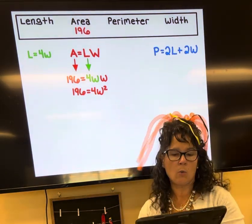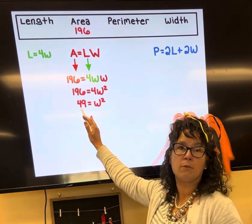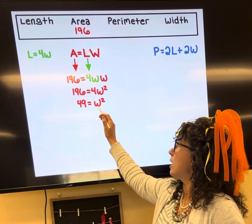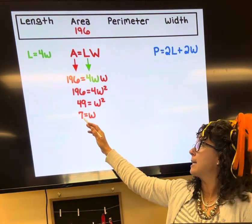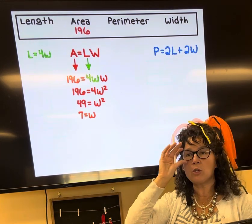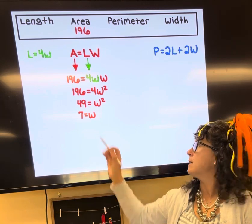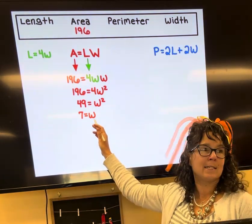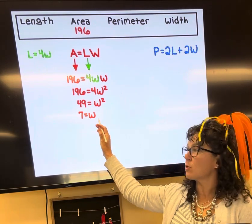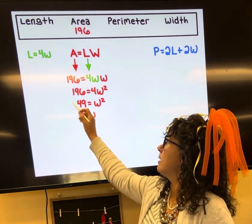Dividing both sides by four, I get 49. And then to undo squaring, I'm going to take the square root. When I square root both sides, I get seven. Normally when you square root both sides, you get both positive and negative seven, but because this is a story problem, width is a distance. It can only be positive, so I just have positive seven.